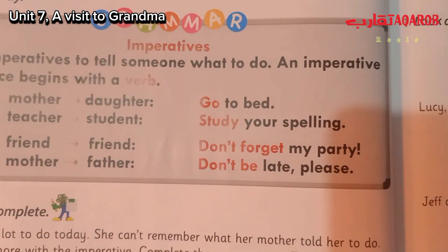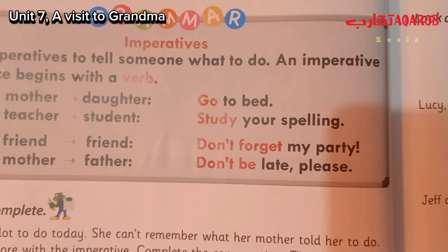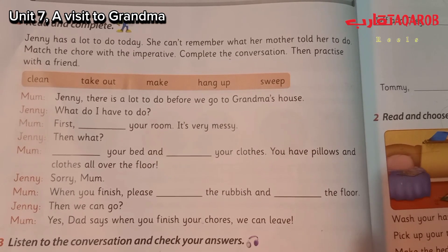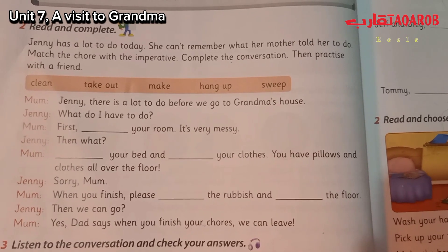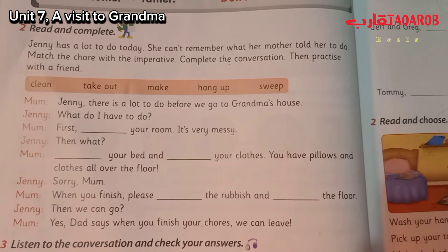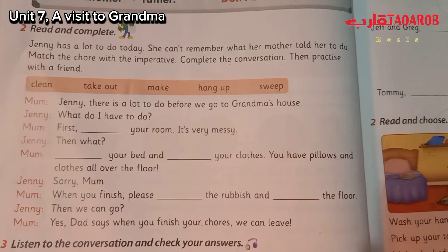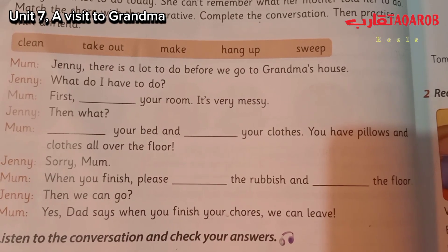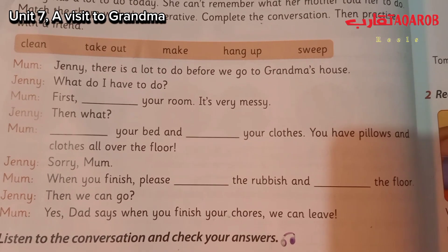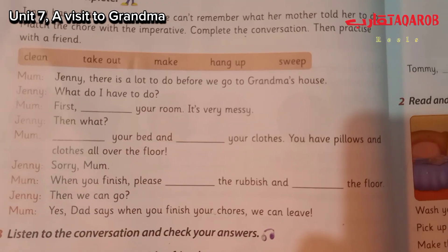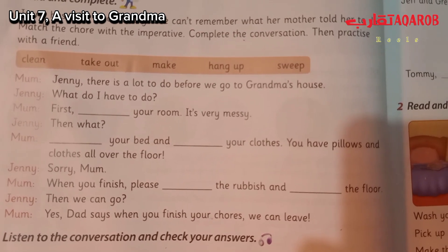Here we have a friend telling his or her friend: 'Don't forget my party. Don't be late please.' Now we have to read and complete. Jenny has a lot to do today — she can't remember what her mother told her to do. Match the chore with the imperative and complete the conversation, then practice. Here we have some words in the box: clean, take out, make, hang up, sweep.